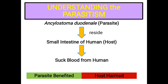Let's have a look at an example to understand the parasitism relationship. A very common hookworm, Ancylostoma duodenale, resides in the small intestine of infected humans. Ancylostoma is the parasite and the host is the human. This parasite sucks blood with the help of its buccal capsule, and ultimately the host suffers from anemia. The disease caused by this parasite is known as Ancylostomiasis. In this relationship, only the parasite gets benefit from the host, but the host gets nothing from the parasite.